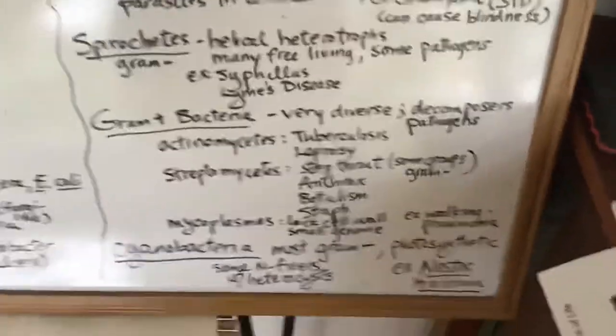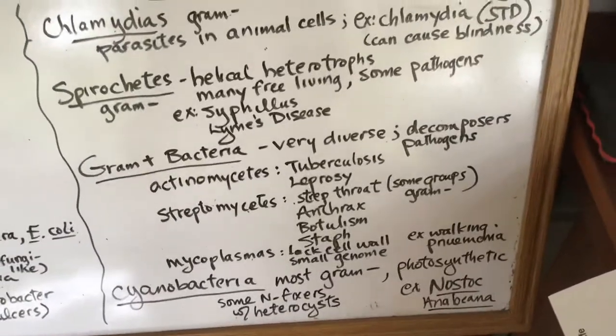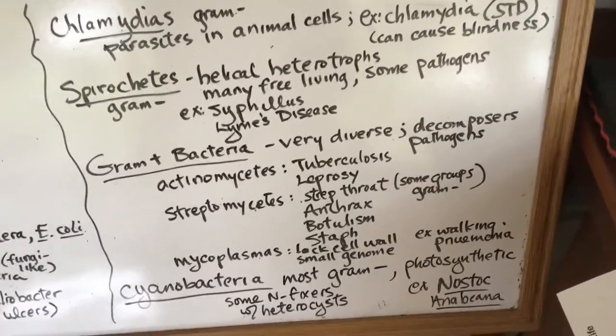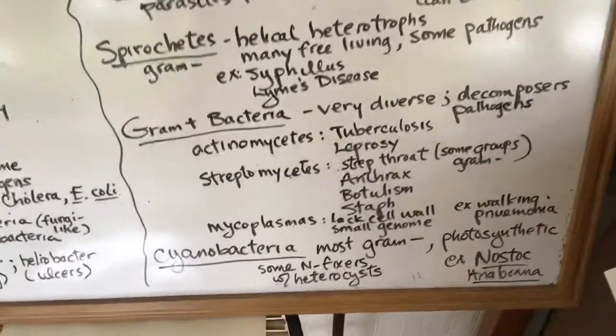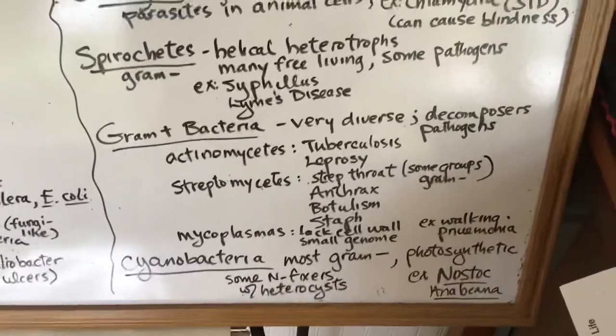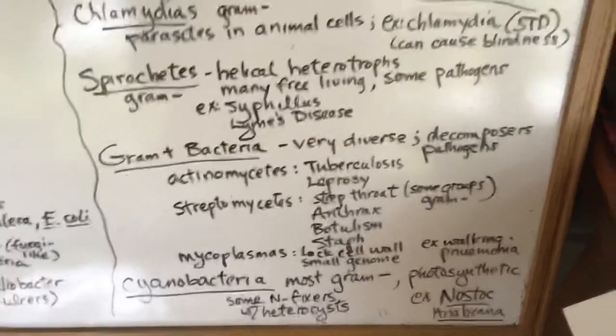Both Chlamydia and Spirochetes are gram negative, so they lump all the gram positive bacteria that are not photosynthetic into one big group. It's very, very diverse. It can include pathogens, decomposers, free living organisms.